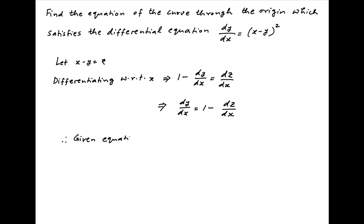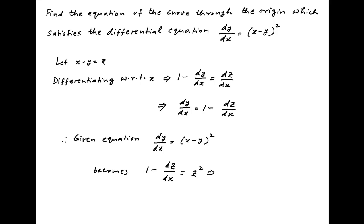Therefore, the given differential equation dy/dx = (x minus y)² becomes 1 minus dz/dx is equal to z², which can be written as dz/dx is equal to 1 minus z².